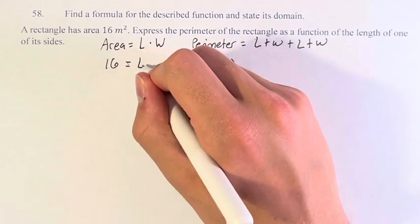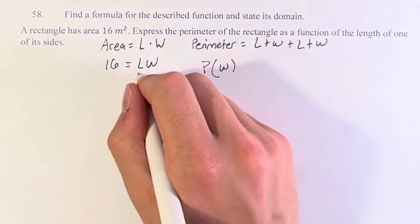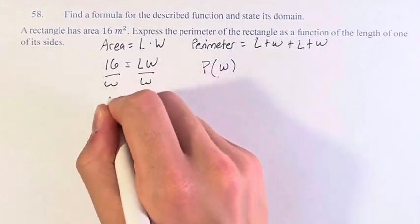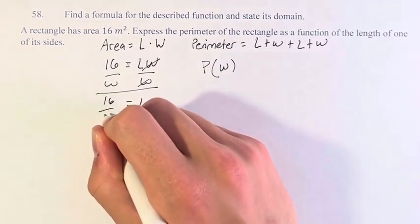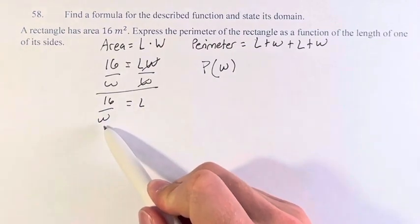This is equal to L times W. And if we divide both sides by W, we get L is equal to 16 over W. So, we have it in terms of the width. Now, we can plug it in.